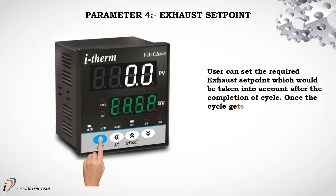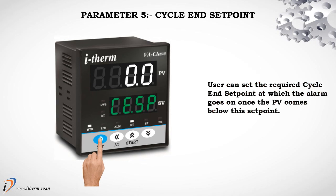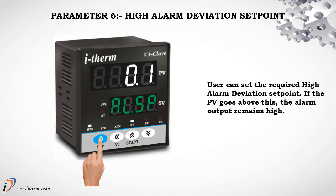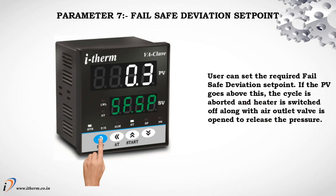Parameter 4: Exhaust Setpoint. The user can set the required exhaust setpoint which would be taken into account after the completion of the cycle. Once the cycle gets over, the exhaust output remains on until the exhaust setpoint. Parameter 5: Cycle End Setpoint. The user can set the required cycle end setpoint at which the alarm goes on once the process value comes below this setpoint. Parameter 6: High Alarm Deviation Setpoint. The user can set the required high alarm deviation setpoint. If the process value goes above this, the alarm output remains high. Parameter 7: Fail Safe Deviation Setpoint. The user can set the required fail safe deviation setpoint. If the process value goes above this, the cycle is aborted and the heater is switched off, along with the air outlet valve opening to release the pressure. This is the last parameter of the user list. Press Set key to enter run mode.